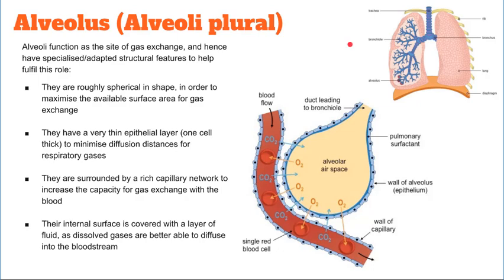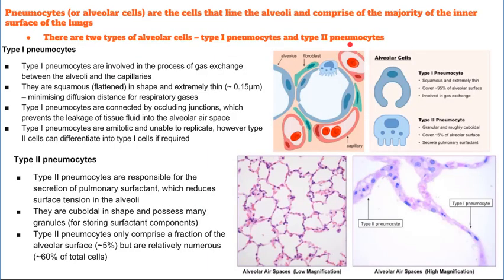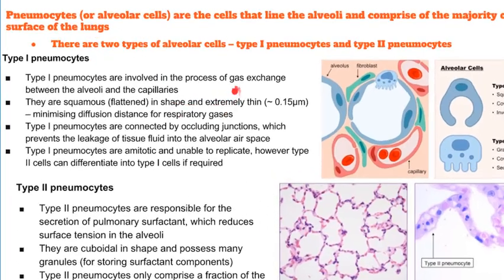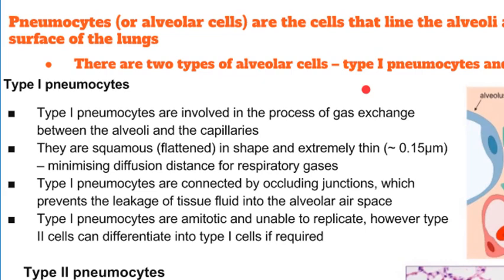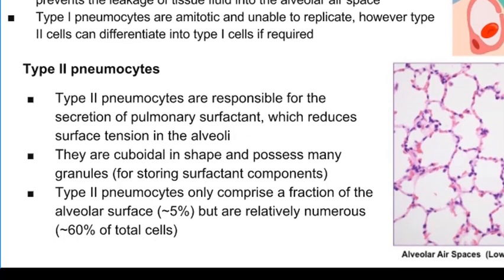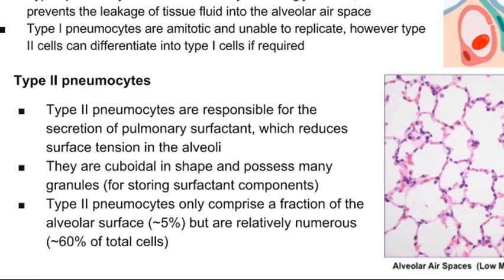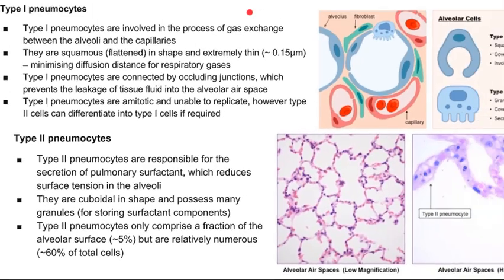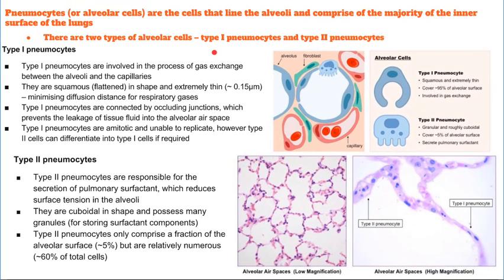The walls of the alveoli contain two types of cells called pneumocytes. Type 1 pneumocytes cover most of the surface — about 97% of the air sac — and are responsible for gas exchange itself. Type 2 pneumocytes are about half as numerous but are larger and rounder; they produce and secrete the liquid containing surfactant, which reduces surface tension and prevents the sides of the alveolus from sticking together. Type 1 pneumocytes cannot divide, but if damaged, type 2 cells can divide to replace them.